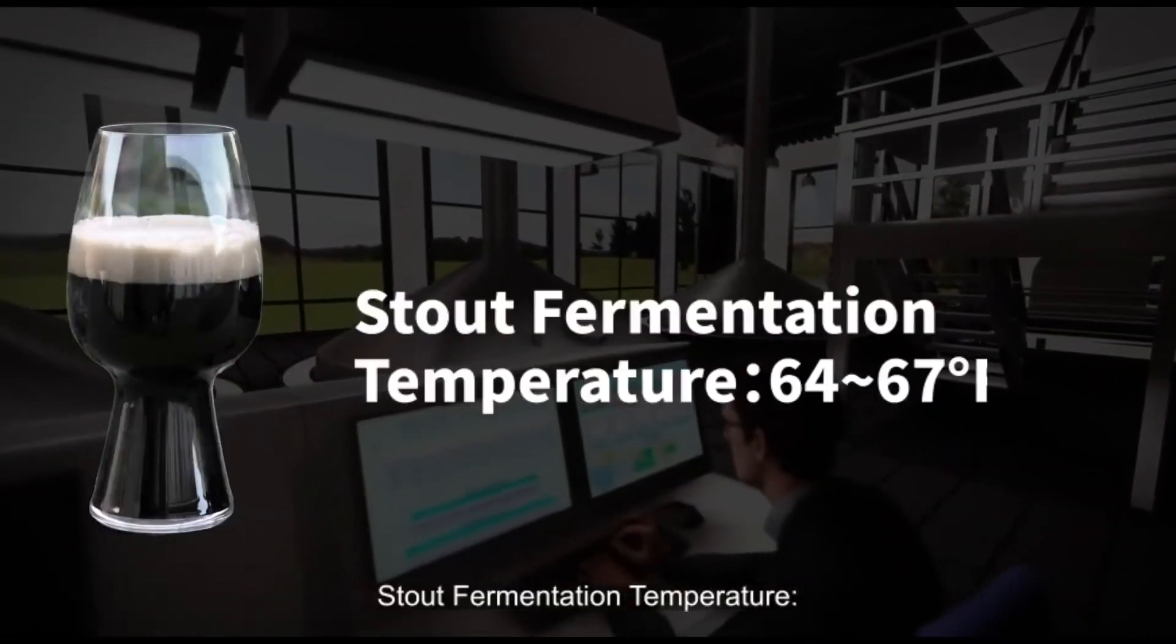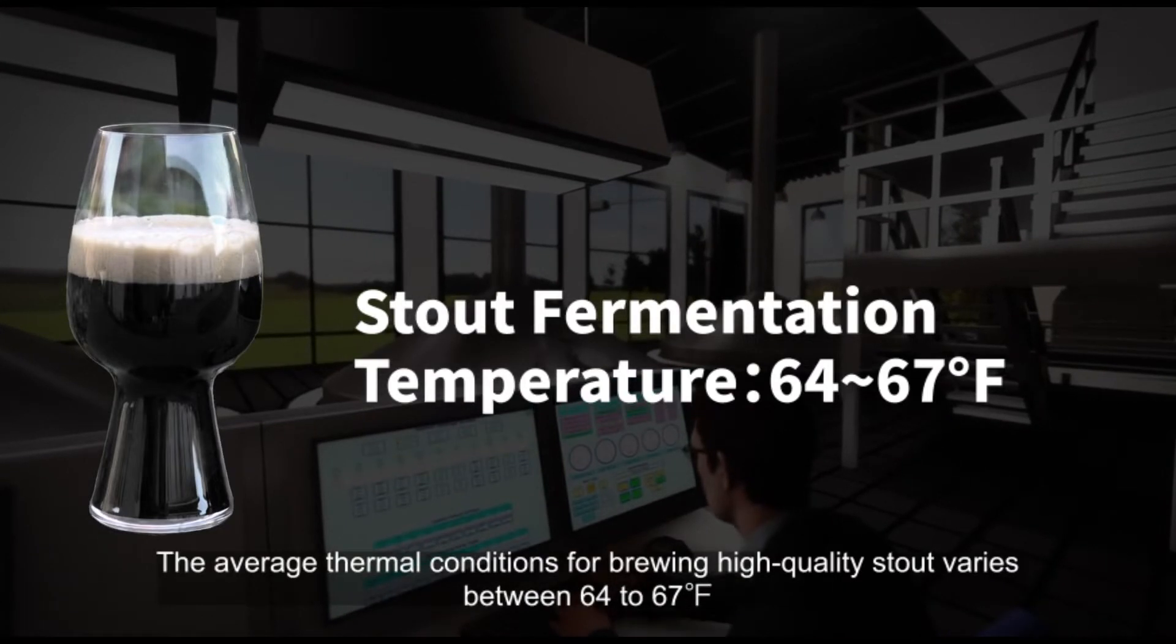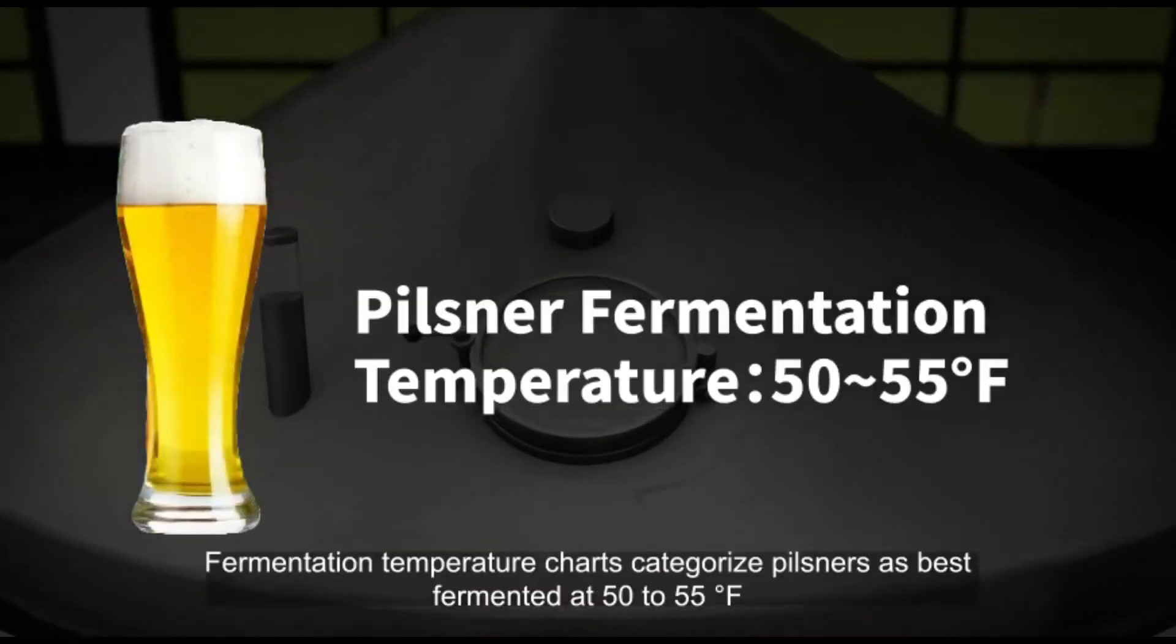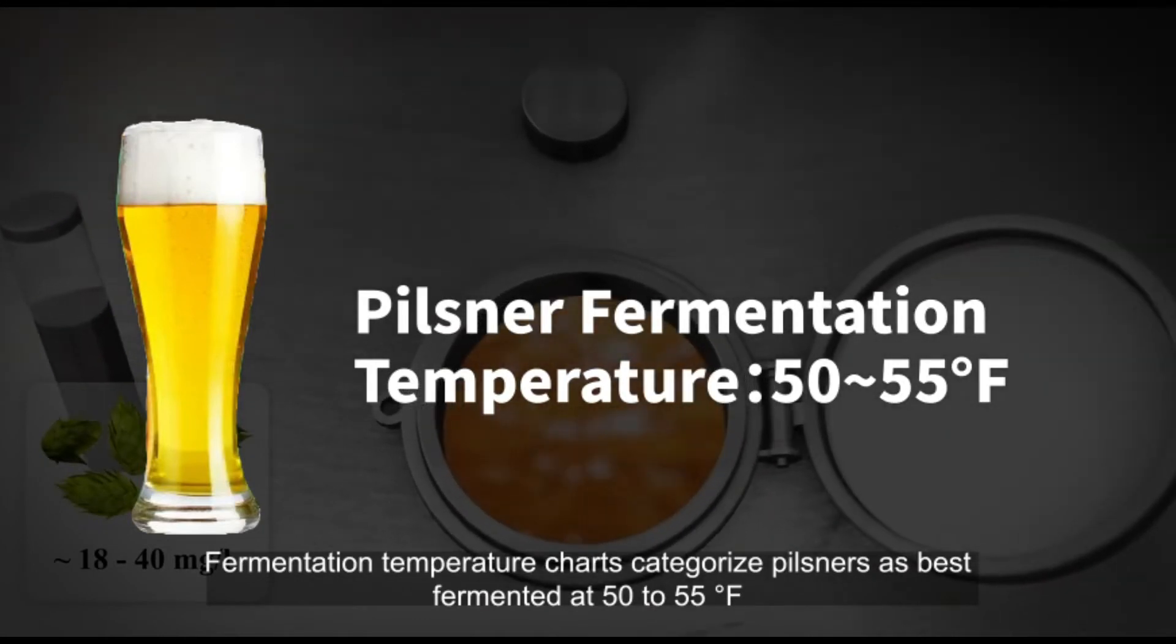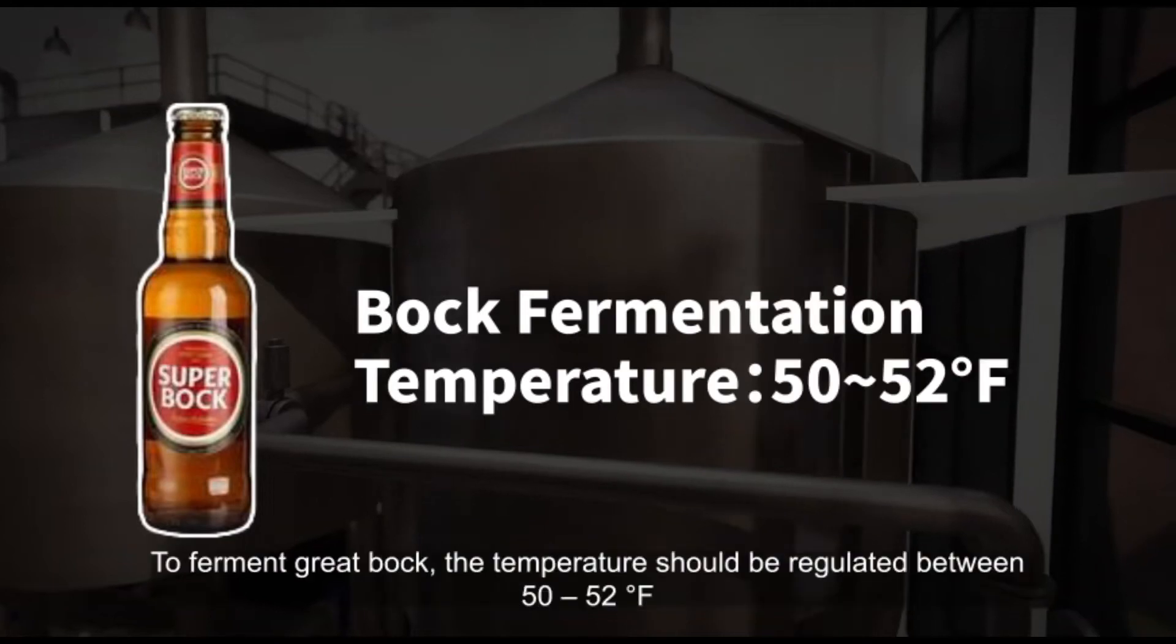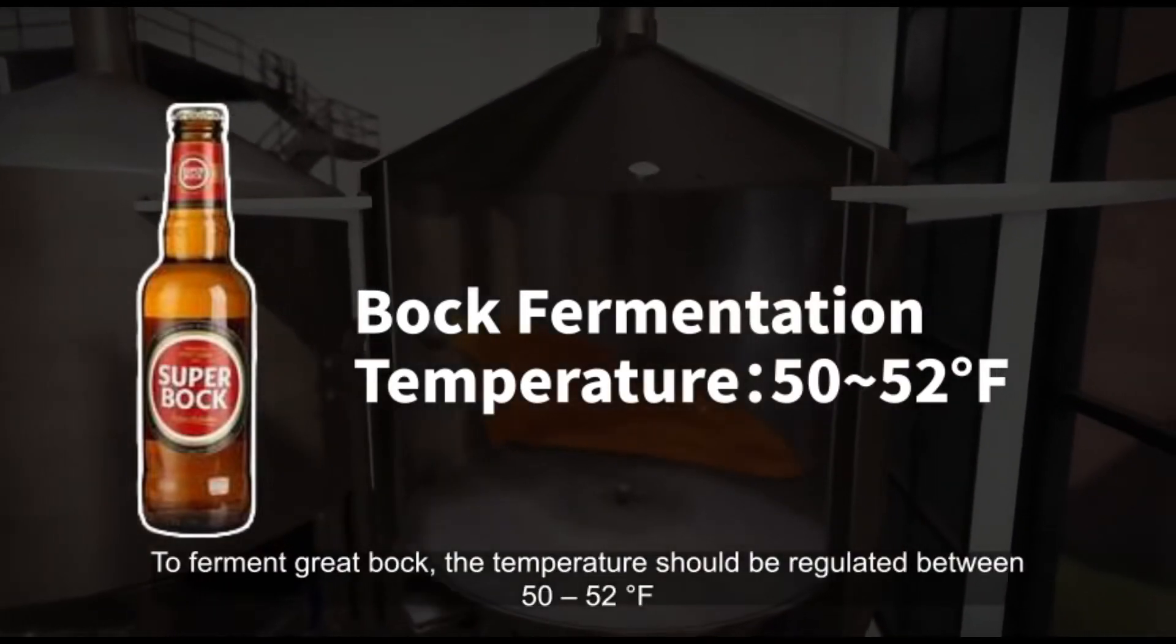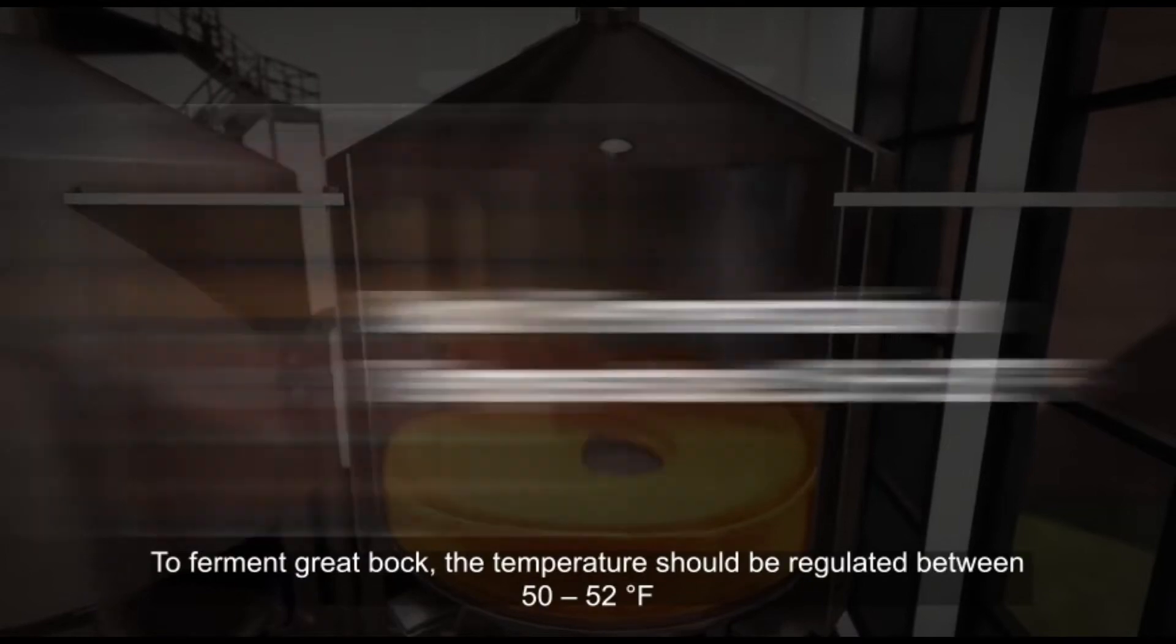Stout Fermentation Temperature: The average thermal conditions for brewing high-quality stout varies between 64 to 67 degrees F. Pilsner Fermentation Temperature: Fermentation Temperature charts categorize Pilsners as best fermented at 50 to 55 degrees F. Bok Fermentation Temperature: To ferment great Bok, the temperature should be regulated between 50 to 52 degrees F.